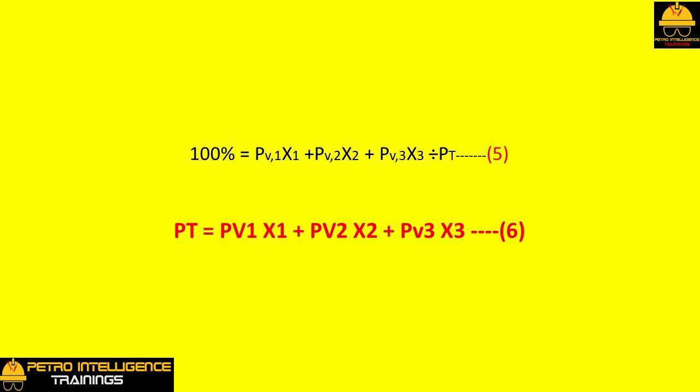If we cross multiply both sides of this equation by PT, we have PT equals PV1 x1 plus PV2 x2 plus PV3 x3. This is the bubble point equation for a three component system.